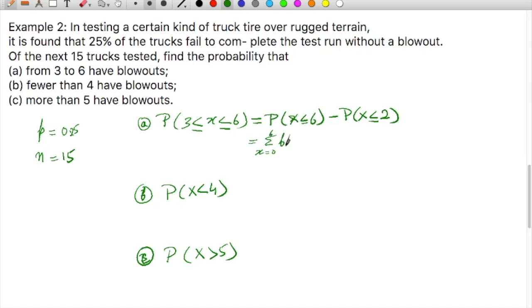B(X; 15, 0.25) minus summation X equals 0 to 2, B(X; 15, 0.25). Now these two values we can see from the binomial distribution tables for n equal to 15.